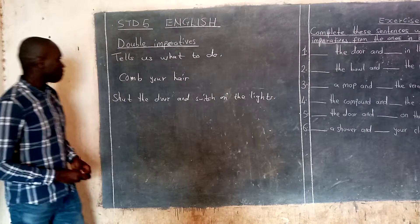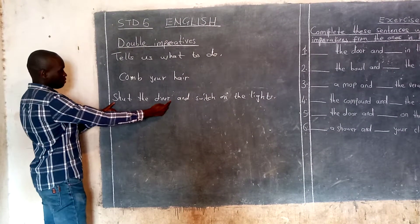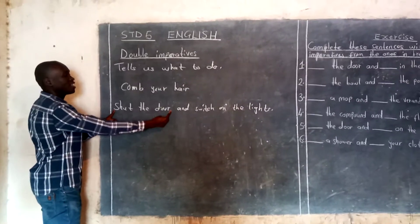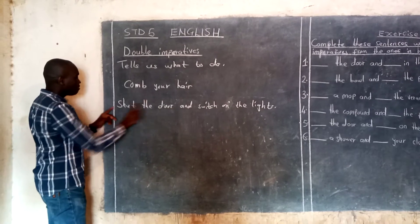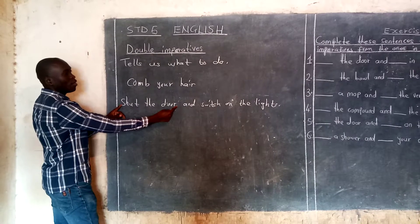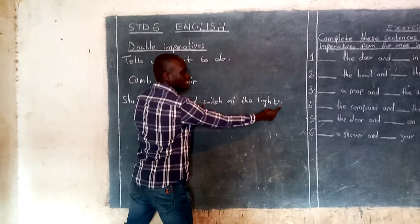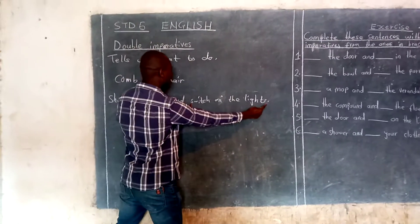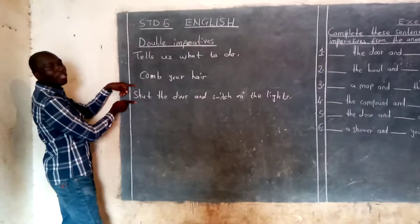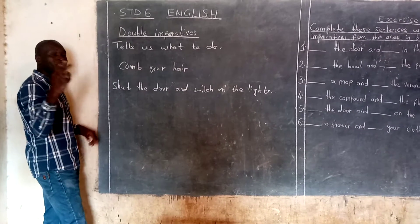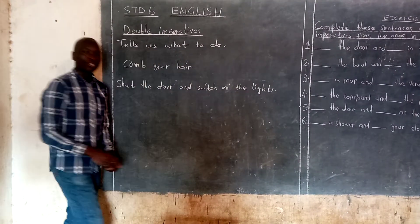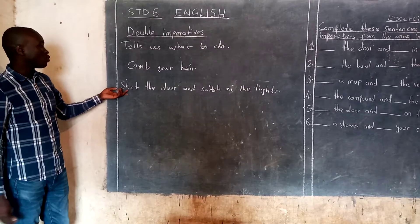If you look at that statement, the first part — 'shut the door' — is already an imperative on its own. It is giving us an instruction of what we should do: that we should shut the door. But then we also have 'switch on the lights,' which is the second part of the sentence. So this sentence qualifies to be a double imperative, because it is telling us two instructions: first, to shut the door, and number two, to switch on the lights.